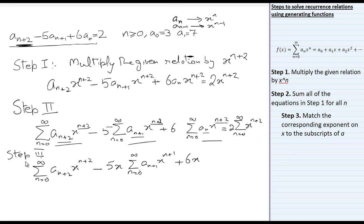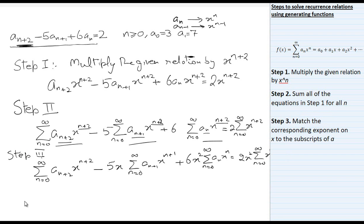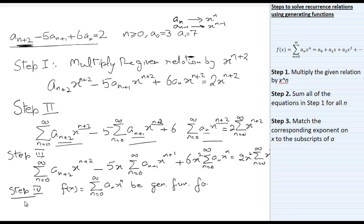Here two extra x's are present, so we write 6x² · Σ(n=0 to ∞) aₙ · x^n, and similarly 2x² · Σ(n=0 to ∞) x^n on the right side. Step 4 is to consider a generating function f(x) defined as Σ(n=0 to ∞) aₙ · x^n. Let this be the generating function for the solution.